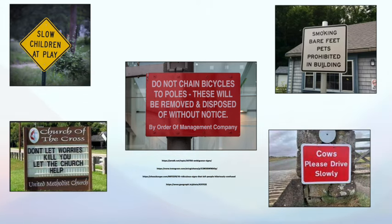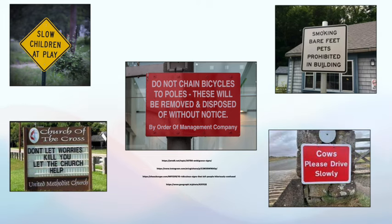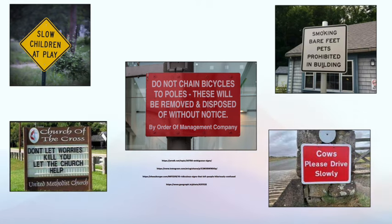The first one says: 'Slow children at play.' 'Don't let worries kill you, let the church help.' 'Do not chain bicycles to poles, these will be removed and disposed of without notice.' 'Smoking bare feet pets prohibited in building.' 'Cows, please drive slowly.' Hopefully these are some fun examples that you can analyse, assess the ambiguity, and understand what the intended meaning was versus what a possible interpretation can be.